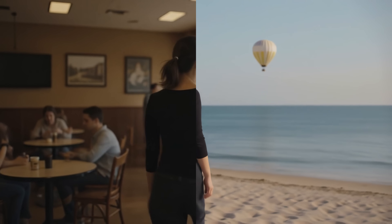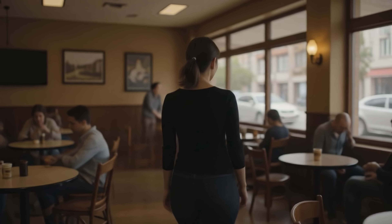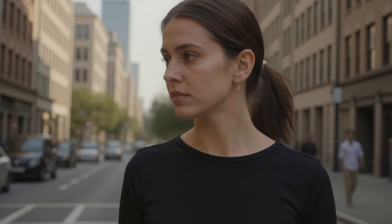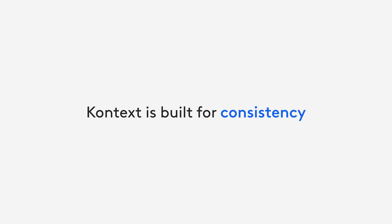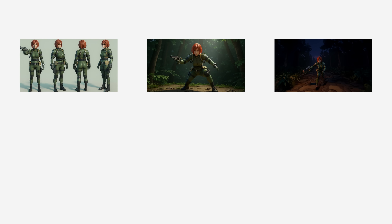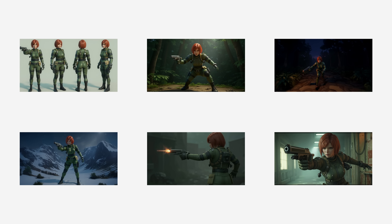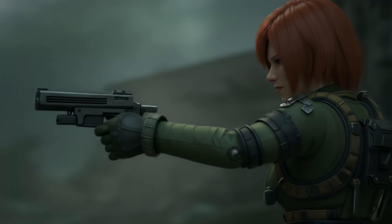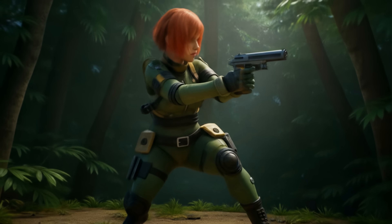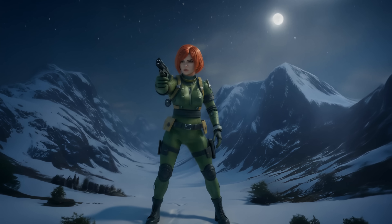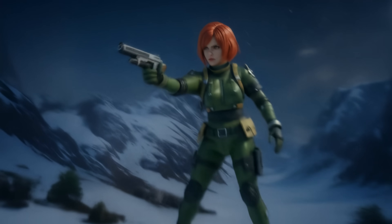One advantage this brings is consistency. One of the biggest challenges in AI is keeping characters, details and overall tone aligned across scenes. Context is built for consistency, so your characters and objects remain stable across edits, making it easier to build cohesive visuals, maintain identity over time and revisit scenes without starting from scratch.